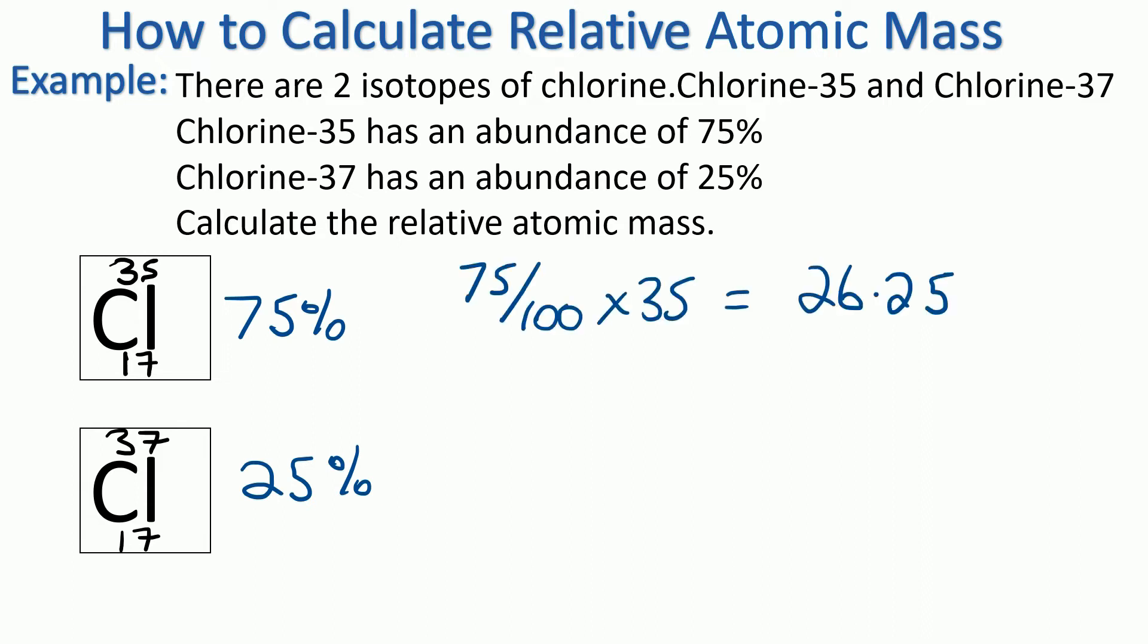Times the mass number 35, and that comes to 26.25. Then we do the same for chlorine-37, but this time we've only got 25% of it, so we do 25 divided by 100 times 37, and that comes to 9.25.